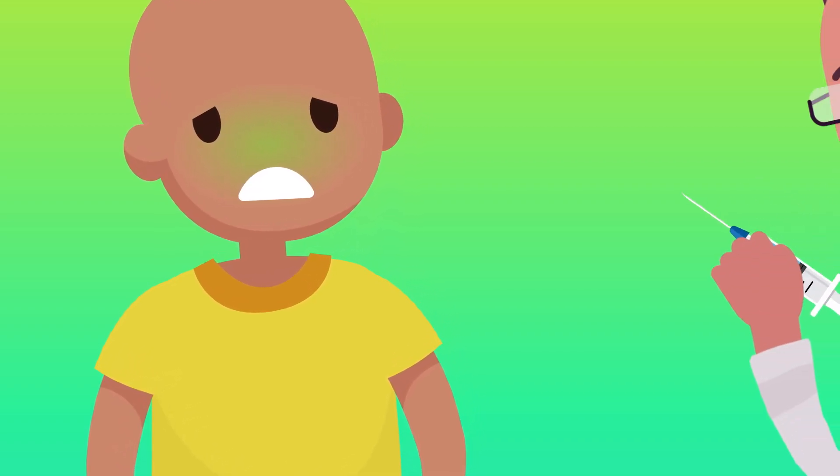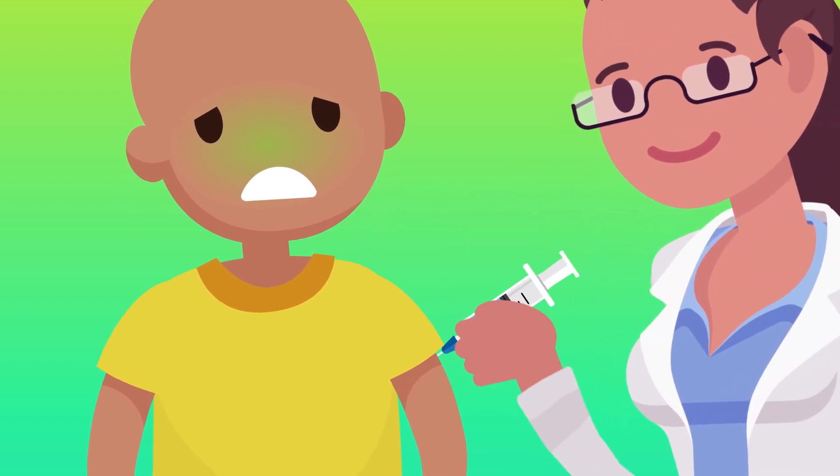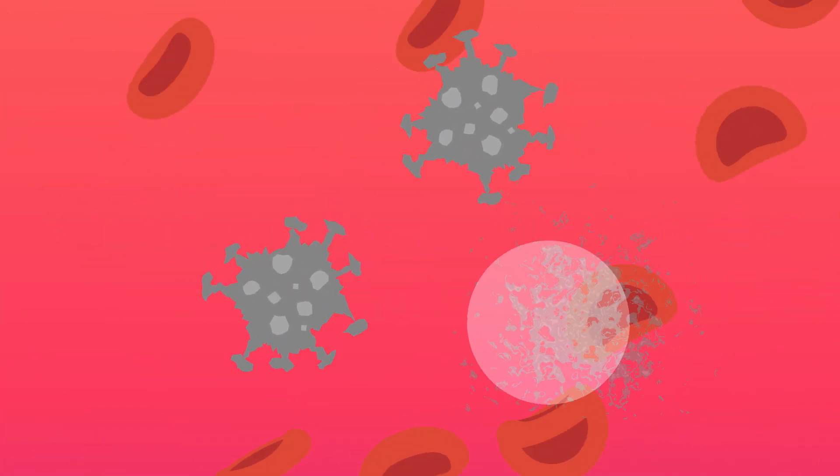But luckily, there is another type called an inactivated virus vaccine that can be given to just about anyone. In these shots, the virus has been completely killed, so it can't give you any of its disease, but your body will still fight back.